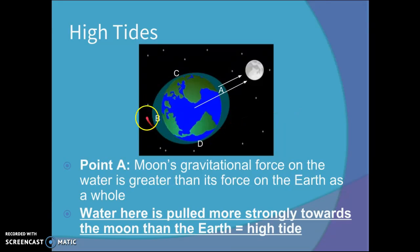That doesn't explain why we also get a high tide on the other side near B. So let's find out why.